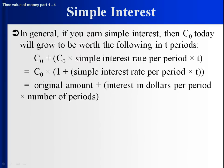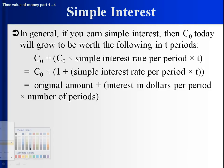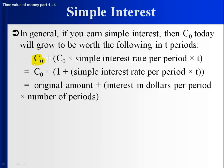In general, if you earned simple interest and you started with C dollars, you would have your C dollars plus C dollars times the simple interest rate per period — that's how much interest you get per period in dollars. But it may be invested for more than one period, so you multiply by the number of periods. So it's the original amount plus the interest in dollars per period times the number of periods.